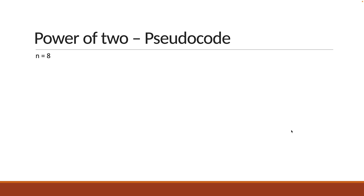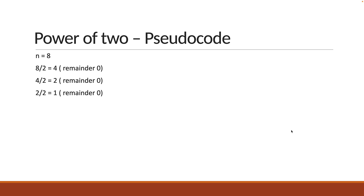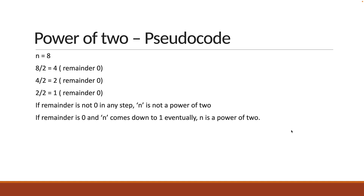Let's take n equal to 8 as an example. What we are going to do is repeatedly divide 8 by 2 — so 4, then 2, and then 1. At each step, we check if the remainder is 0. If at any point the remainder is non-zero, we can return false and safely say it is not a power of 2. If the division continues and the number comes down to 1, we say it is a power of 2.